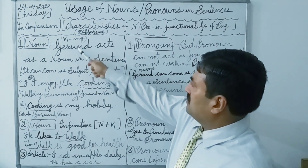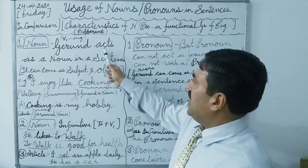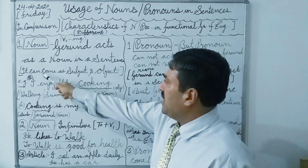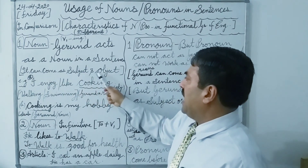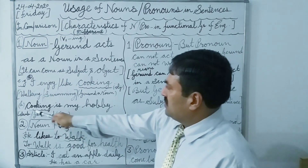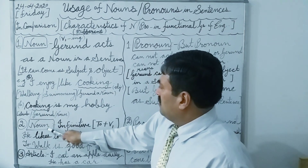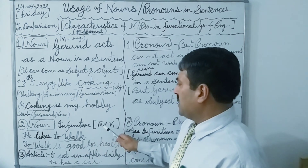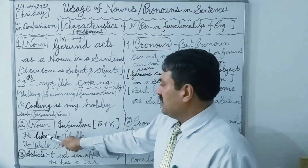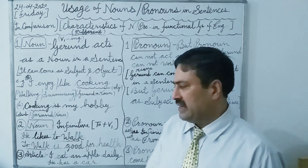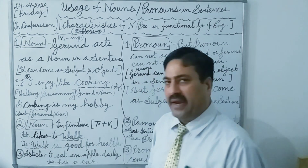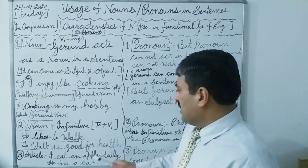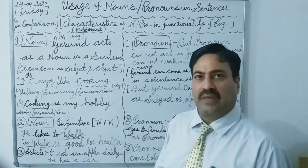So to summarize: in a sentence, gerund acts as a noun and can come as a subject or object. Second, infinitive can come as a noun, as a subject and as an object in a sentence. And in the third point, articles 'a,' 'an,' and 'the' can come before a noun.